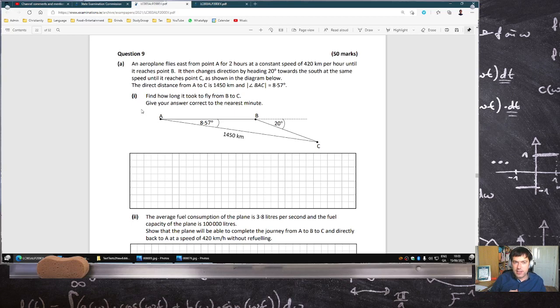In this first question, question 9, you're told an airplane flies east from point A for two hours to B, and then it reaches B and then changes direction and travels towards C. And it reaches point C, and there's all the information on the diagram.